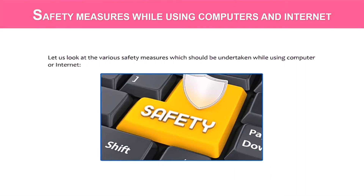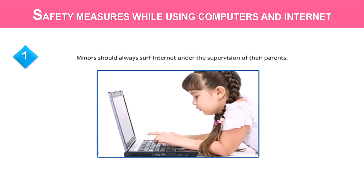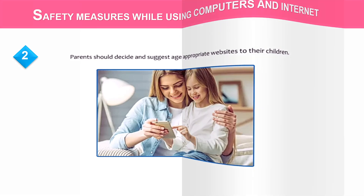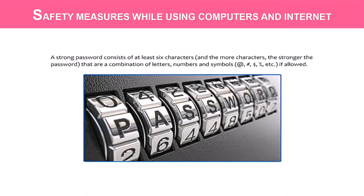Now let's look at the various safety measures which should be undertaken while using a computer or the internet. First, minors should always surf the internet under the supervision of parents. Two, parents should decide and suggest age-appropriate websites to their children. Three, to minimize the chances of attack by hackers and crackers, one should use strong passwords. A strong password consists of at least six characters that are a combination of letters, numbers and symbols. Remember: the more characters, the stronger the password.